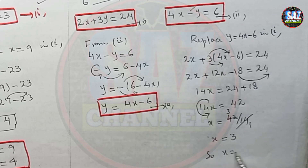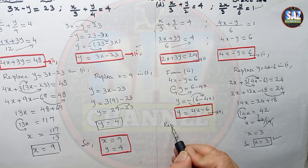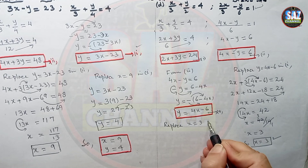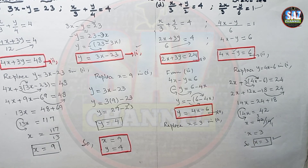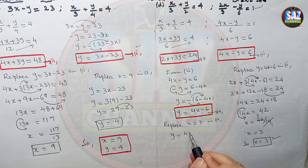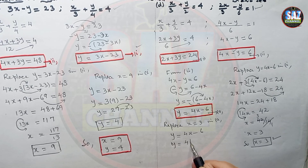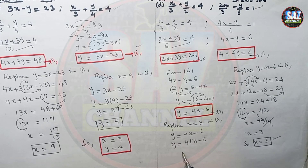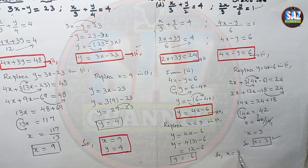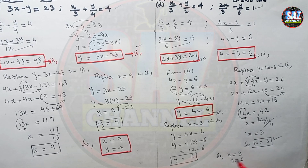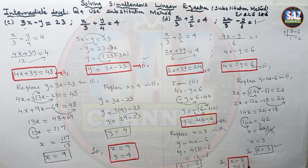With x equals 3, replace in the expression y equals 4x minus 6: y equals 4 times 3 minus 6, which is 12 minus 6 equals 6. So y equals 6. The solution is x equals 3 and y equals 6. I hope you are clear about this question. Please like, share, and subscribe to the channel and press the bell icon to get notifications. Thank you very much.